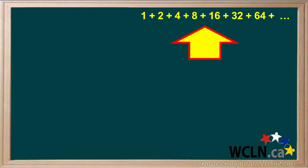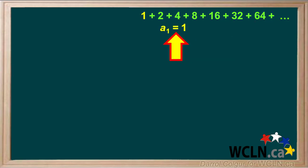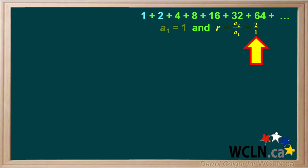Let's look at this geometric series: 1 plus 2 plus 4 plus 8, etc. We see that the first term, A1, is equal to 1, and the common ratio, R, is term A2 divided by term A1, or 2 over 1, which is equal to 2.